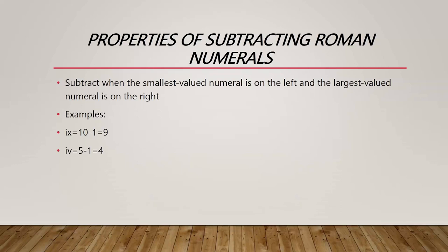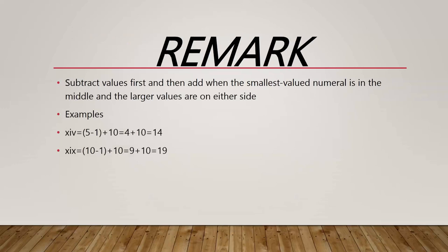For more complex cases, like XIV, we focus on the last two pieces: I and V. Since the smallest value is on the left, we subtract: 5 minus 1 equals 4. Then we add the X which is 10: 4 plus 10 equals 14.